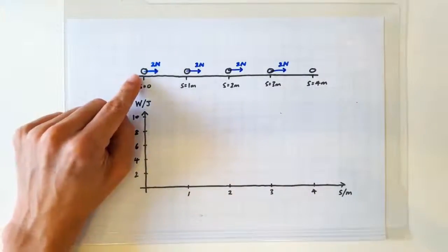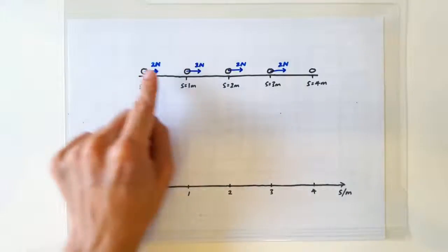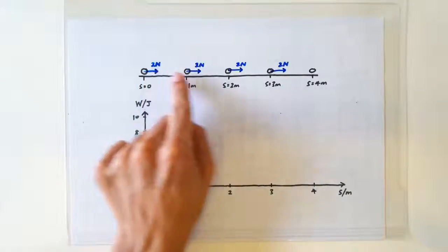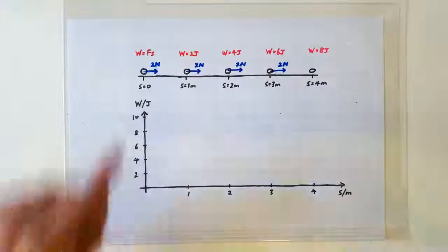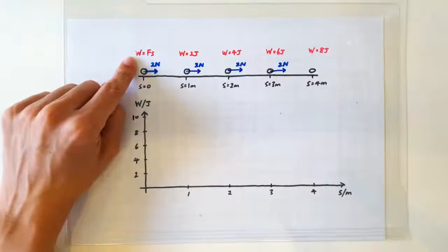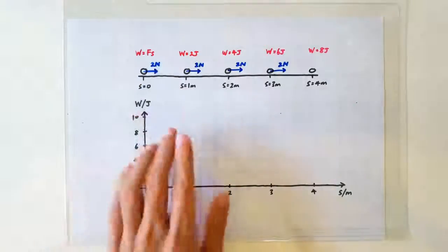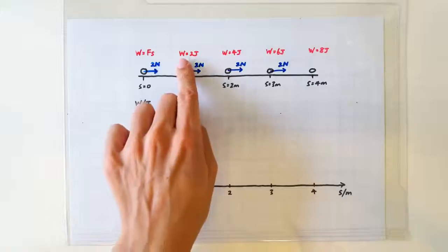Consider a mass that's pulled along by a constant force of 2 newtons. Since work done by a constant force is F times S, then after 1 meter, the amount of work done will be 2 joules.